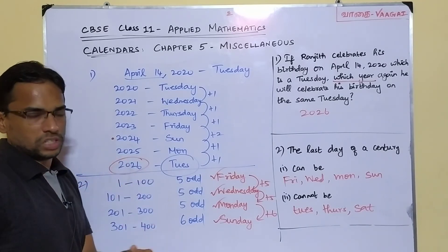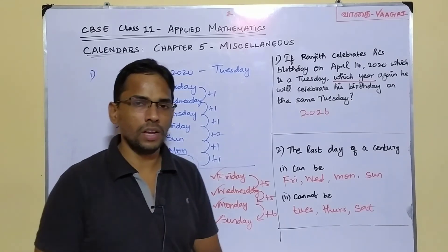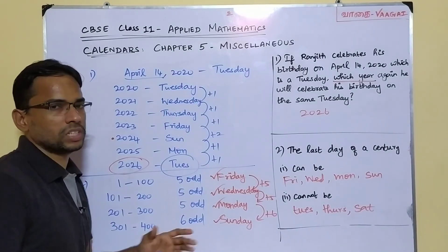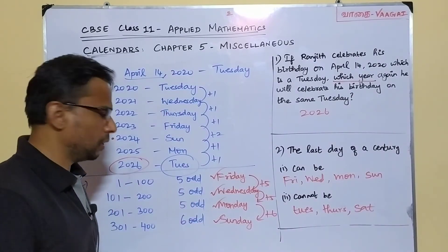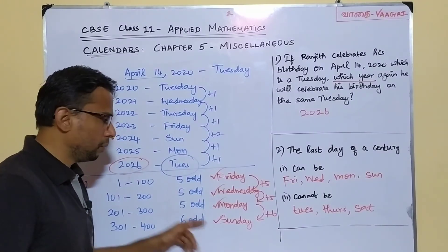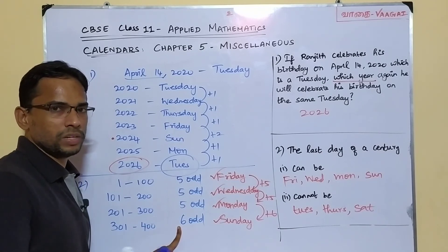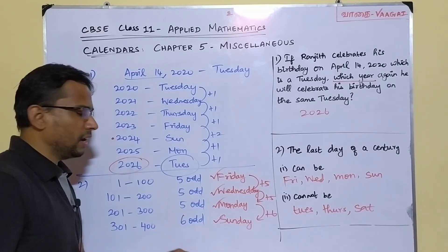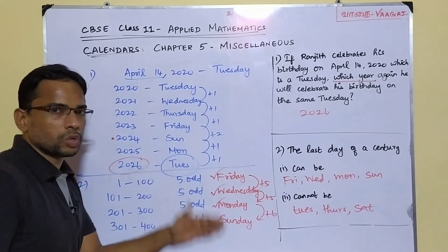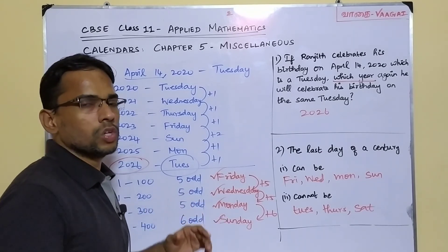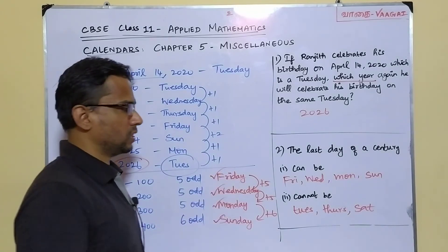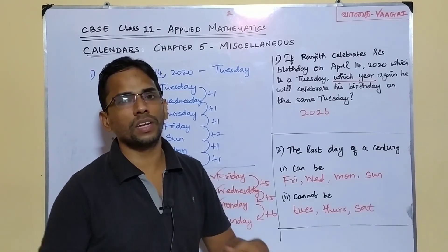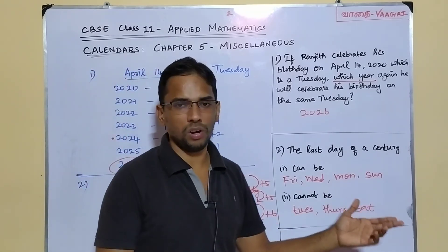You may wonder about centuries beyond the first 400 years. The answer is simple: the total odd days for 400 years is 21, which equals zero odd days (since 21 is divisible by 7). So the cycle repeats from year 401 onwards, giving us 5, 5, 5, 6 again. The last day of a century will always cycle through Friday, Wednesday, Monday, Sunday — and can never be Tuesday, Thursday, or Saturday.